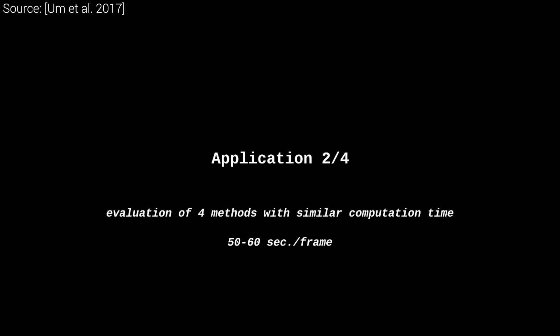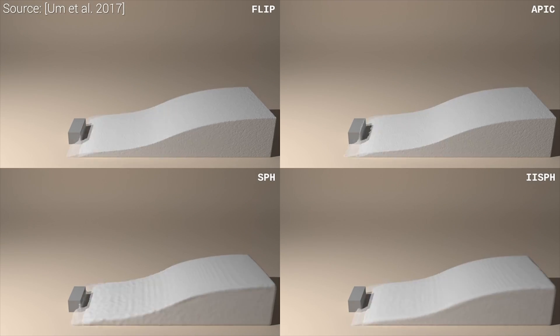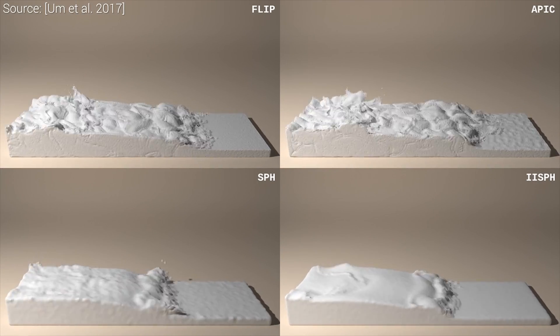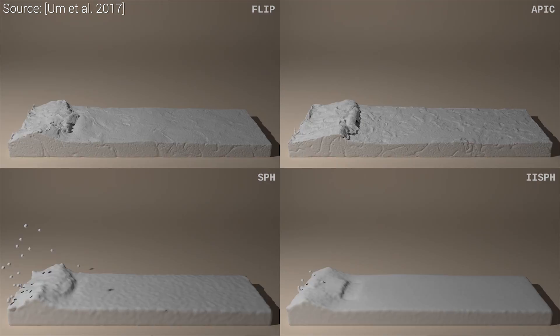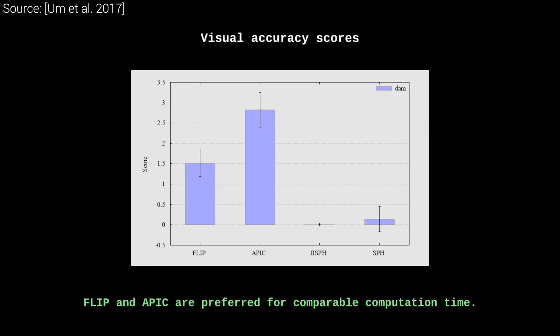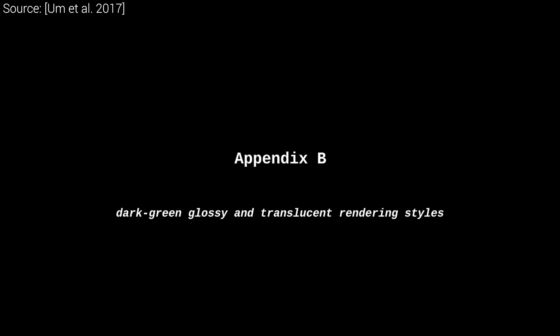To keep things fair and really reveal which choices are the best bang for the buck, there are also comparisons between techniques that have a similar computation time. In these cases, the fluid implicit particle, FLIP in short, and the affine particle in cell are almost unanimously favorable.